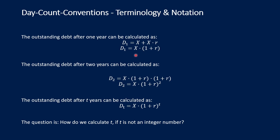If we do the same after two years, the outstanding debt after year two equals the principal amount times one plus the interest rate, times one plus the interest rate — or more simply, the principal amount times one plus the interest rate squared. Generalizing, the outstanding debt after T years equals D_T equals the principal amount times one plus the interest rate to the power of T. So here T is introduced for compounding.